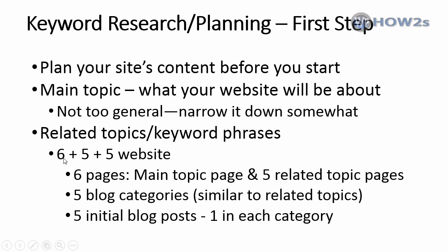We are going to make what I call a six-plus-five-plus-five website. That means having six pages: our main topic page, our home page, and five related topic pages. These related topics have to be very closely related to the main topic — this is our silo. Then underneath we have five blog categories, similar to those related topic pages, and in each blog category we'll have five initial blog posts.